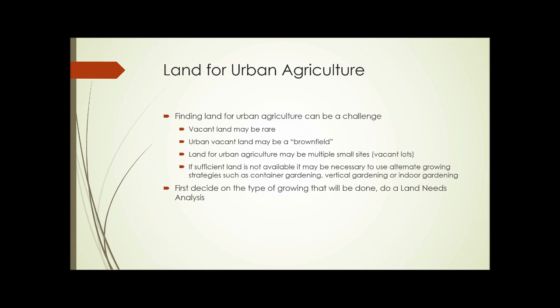Finding land for urban agriculture can be a challenge for several reasons: vacant land may be rare in certain urban areas; urban vacant land may be what's known as a brownfield; land may have to be spread across multiple small sites or vacant lots rather than a single large unit. If sufficient land is not available, it might be necessary to use alternate growing strategies such as container gardening, vertical gardening, or indoor gardening. First decide on the type of growing to be done, then do a land needs analysis.